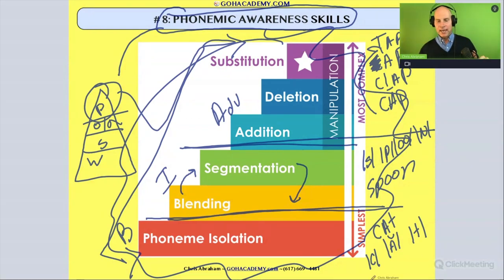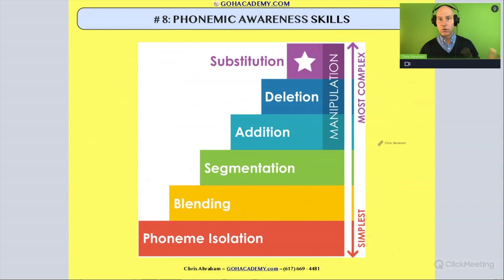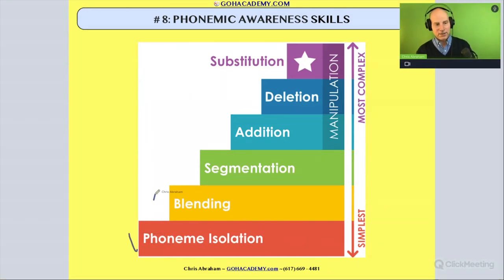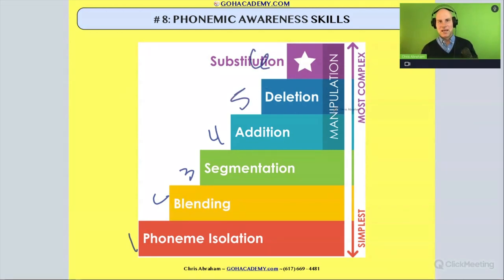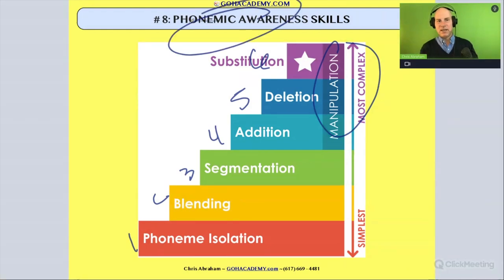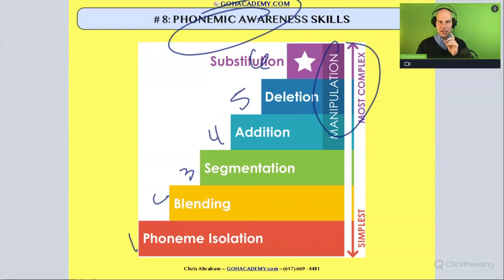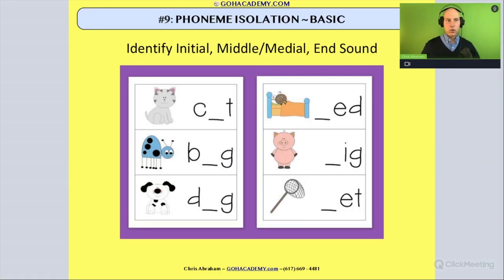Very important ideas, and each one of these is a vocab word too. So we've got a lot of vocabulary here: phoneme isolation, blending, segmenting, addition, deletion, substitution — that's six. Manipulation is seven, it's made up of those three. Phonemic awareness is eight. There's lots of language here to study. Let's take a look at our first question — it's going to involve phoneme isolation, and these are going to be basic.